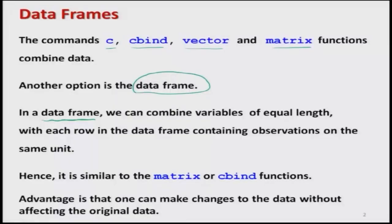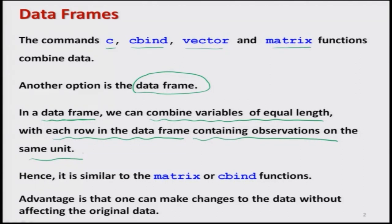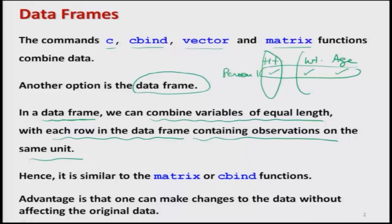In a data frame, we have information on different types of data sets where each variable is a column and each row contains the information for an individual unit. So variable 1 is column 1, variable 2 is column 2, variable 3 is column 3, and then persons are arranged in rows: person 1, person 2, person 3, and so on. For example, the first column is height, second is weight, and third is age, with each row holding all observations for one person.